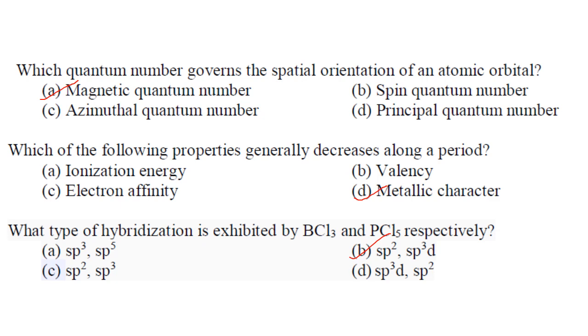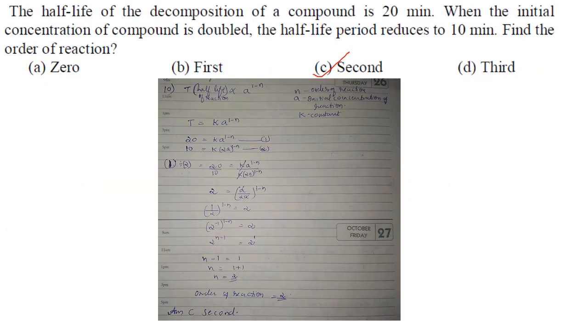What type of hybridization is exhibited by BCl3 and PCl5 respectively? It is sp² and sp³d. Answer is option B.